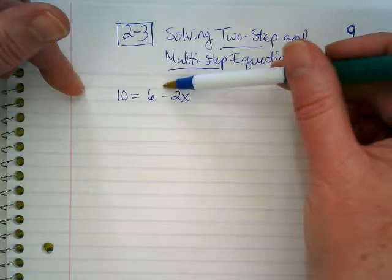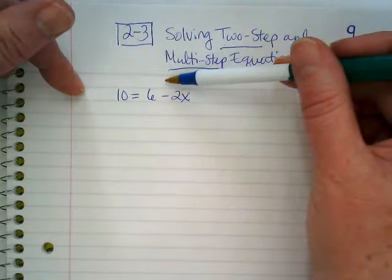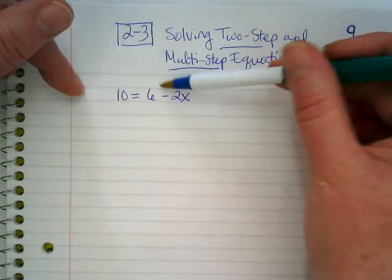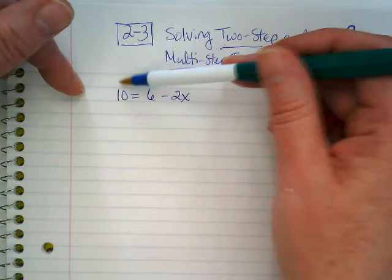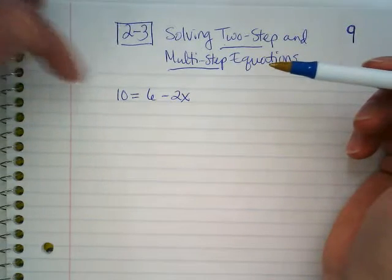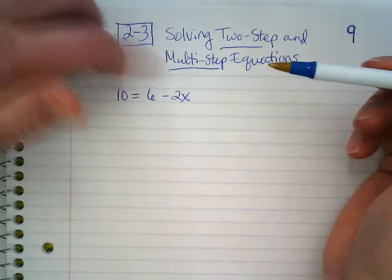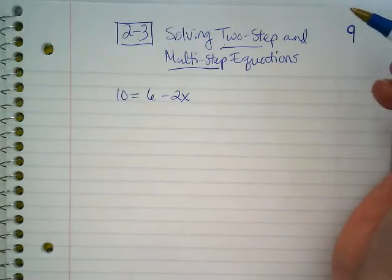I kind of think of it as the unattached number. It's just out there in the problem, and it's really a like term with the other number that's on the other side of the equation. 10 and 6 are like terms. Would you guys agree with that? Neither of them have the variable.